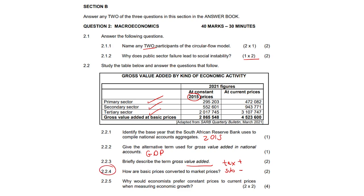2.2.5: Why would economists prefer constant prices to current prices when measuring economic growth? Constant prices are adjusted to exclude the effects of inflation, whereas current prices are not. Constant prices provide a true reflection of actual changes in the production of goods and services, while current prices give a more distorted reflection.